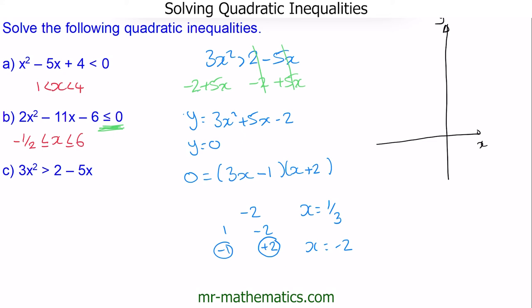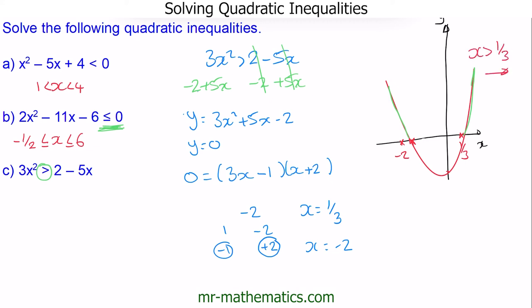We can sketch the roots at x equals one third and x equals negative 2. The y-intercept will be at negative 2. Going back to our inequality, this is greater than 0, so we're looking above the line in both outer directions. Our solutions are when x is greater than one third, and when x is less than negative 2.